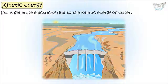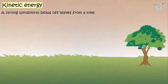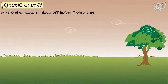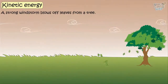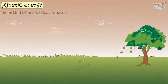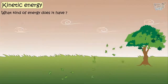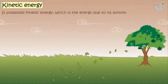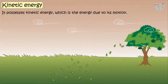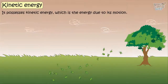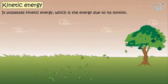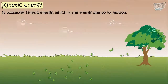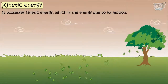A strong windstorm blows off leaves from a tree. What kind of energy does it have? It possesses kinetic energy — that is, energy due to its motion.